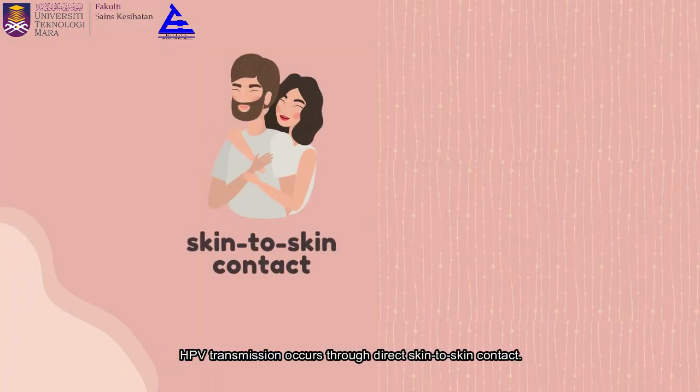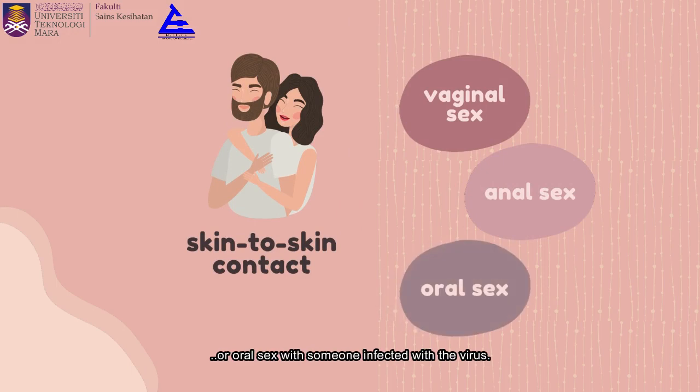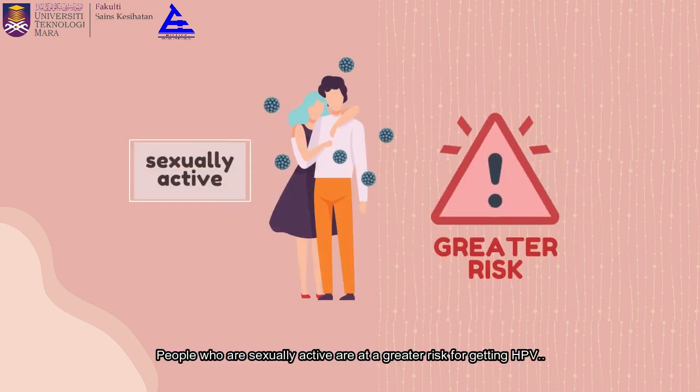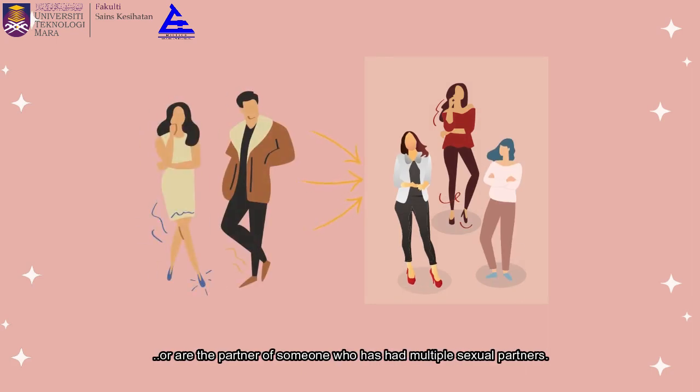HPV transmission occurs through direct skin-to-skin contact. HPV infection can be transferred during vaginal, anal, or oral sex with someone infected with the virus. It is typically transmitted through vaginal or anal sex. People who are sexually active are at greater risk for getting HPV, especially if they have numerous sexual partners at the same time or are the partner of someone who has had multiple sexual partners.